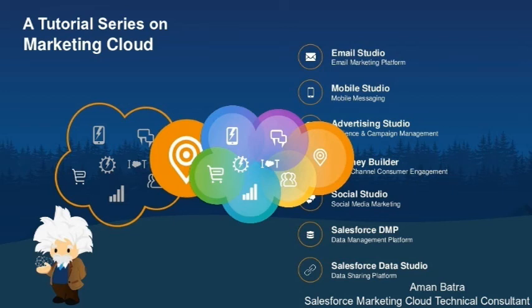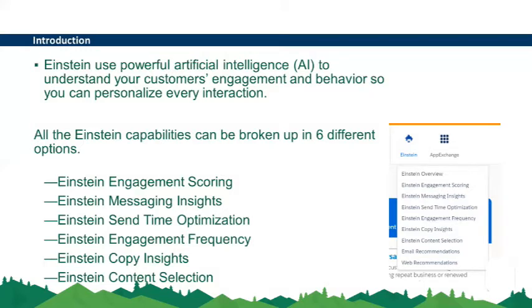Hello, my name is Aman and in this video I'm going to give an introduction on Marketing Cloud Einstein capabilities and different Einstein Studios. Marketing Cloud Einstein provides powerful artificial intelligence to understand your customers' engagement and behavior so you can personalize every interaction. Salesforce has broken up the Einstein capabilities into six different studios which are available under the Einstein tile on the dashboard in Marketing Cloud.